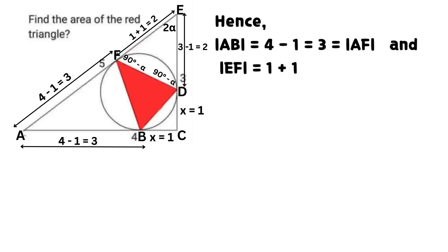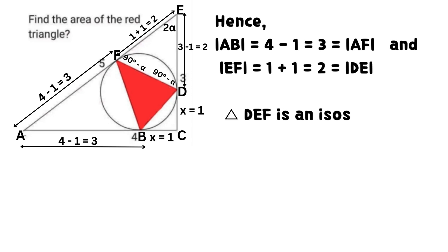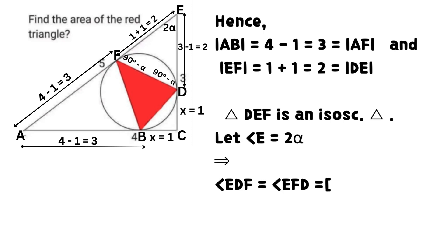Hence, AB equals 4 minus 1, which equals 3. This result also equals AF. Line EF equals 2, which equals DE. Triangle DEF is an isosceles triangle.